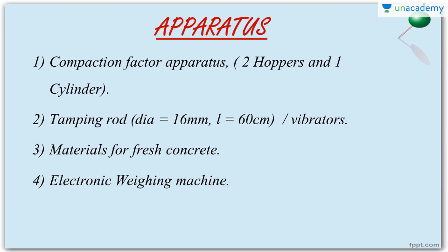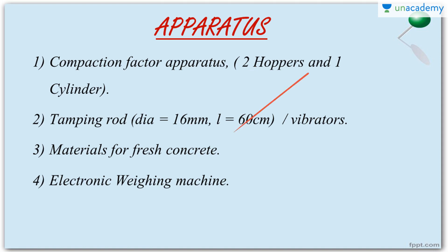Now let's see what apparatus are required for the compaction factor test. First and foremost, we need the compaction factor apparatus, which has two hoppers and one cylinder. We also need the tamping rod or vibrators — the tamping rod of diameter 16 mm and length 60 cm. If you have vibrators in your lab, very good; otherwise, use the tamping rod. Also required are materials for fresh concrete preparation and an electronic weighing balance.